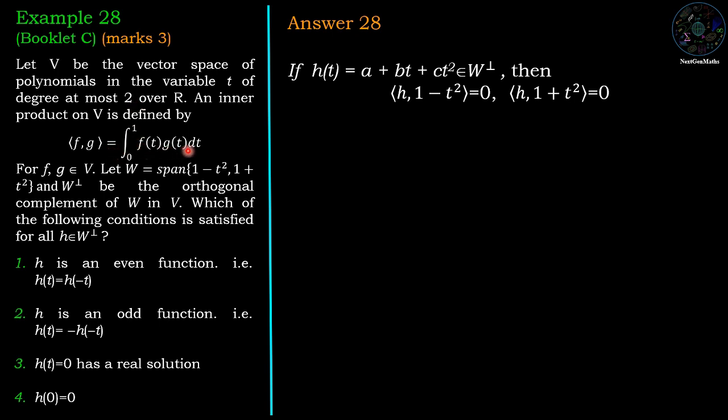Now we have given the definition of inner product f with g equals integration 0 to 1 f(t)g(t)dt. So inner product with 1 minus t squared equals 0. So by the definition, it is integration 0 to 1 h(t) times 1 minus t squared dt, where h(t) equals a plus bt plus ct squared.